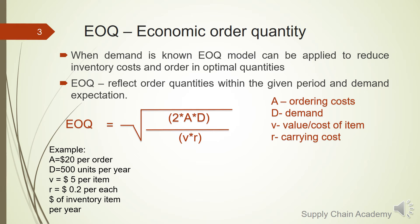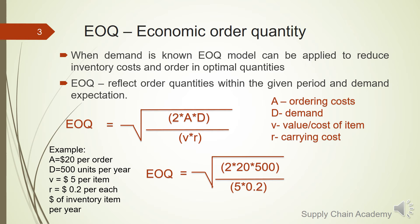For example: A = $20 per order, D = 500 units per year, V = $5 per item, R = $0.20 per dollar of inventory item per year. In this case EOQ equals 141, meaning that with a demand of 500 we should order approximately 4 times a year to meet demand.